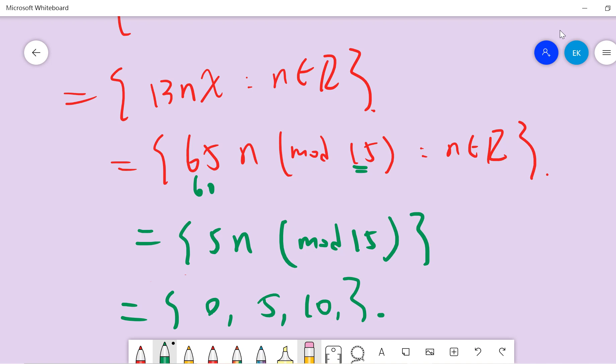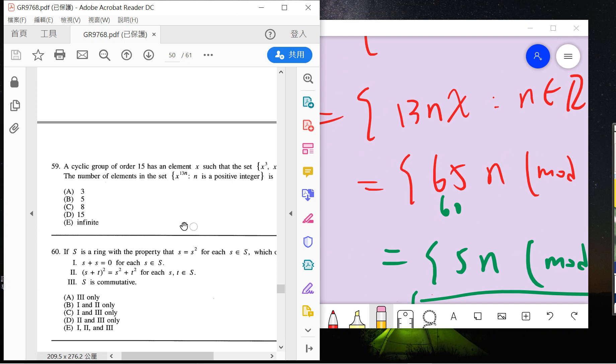So the answer is 3. The number of elements is 3, so we choose A.